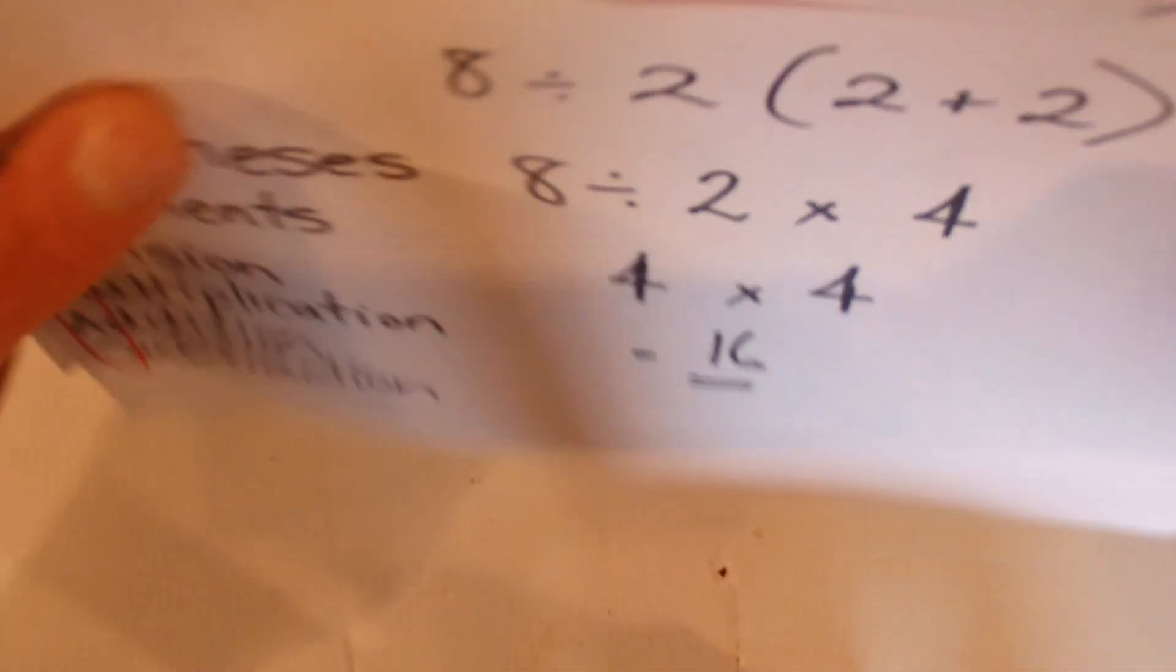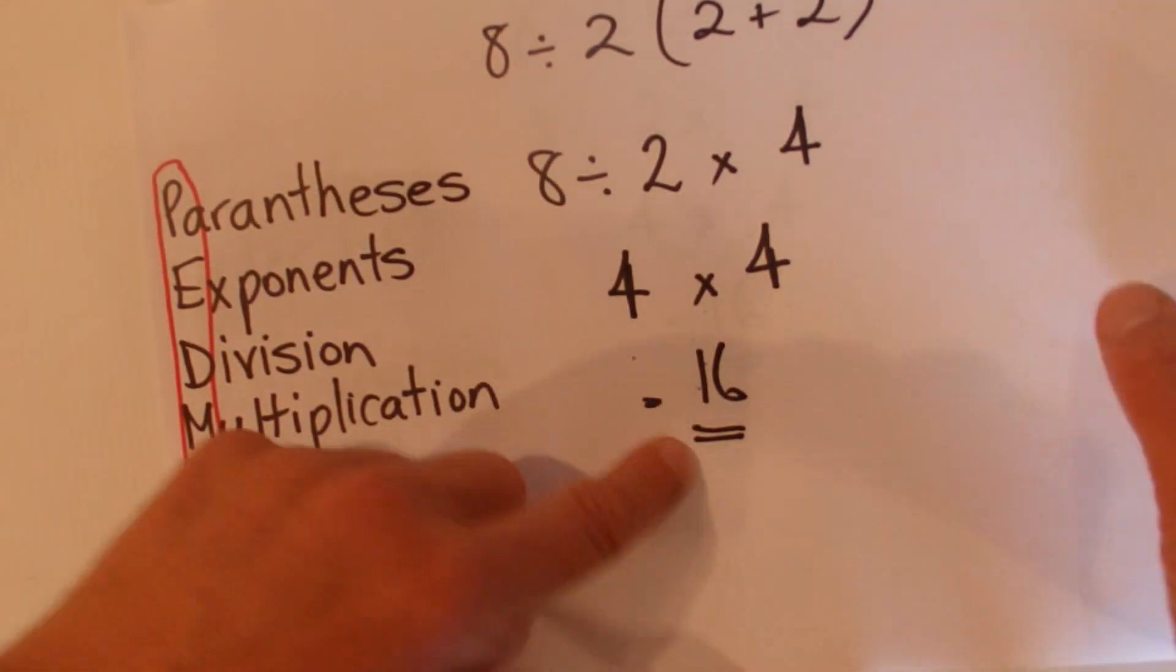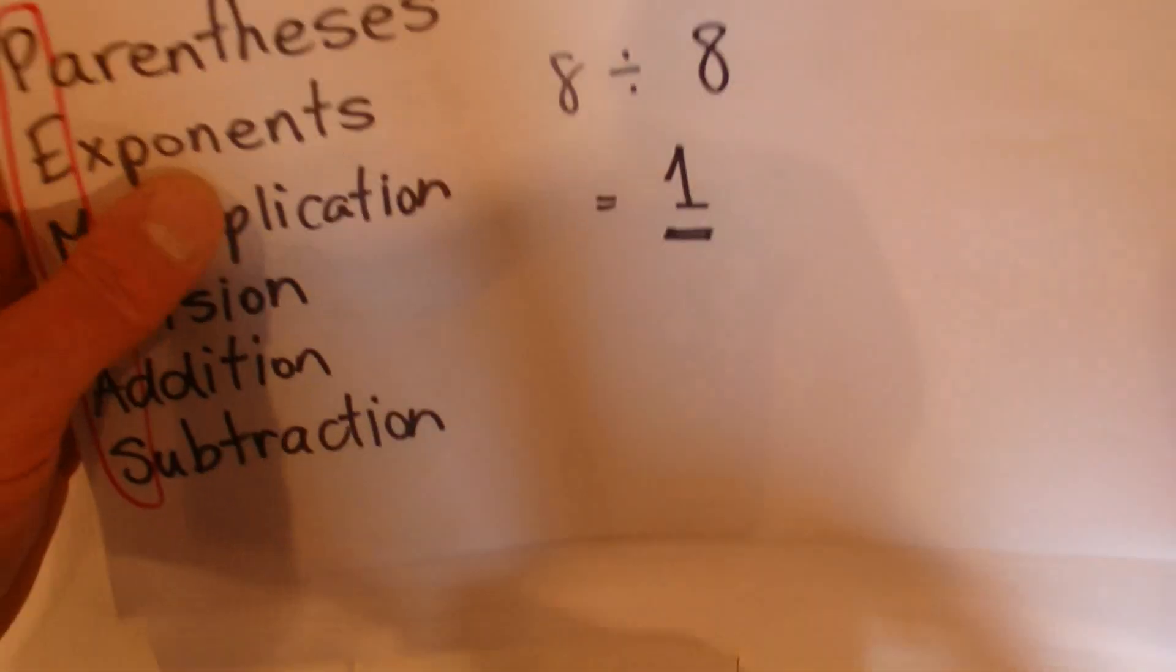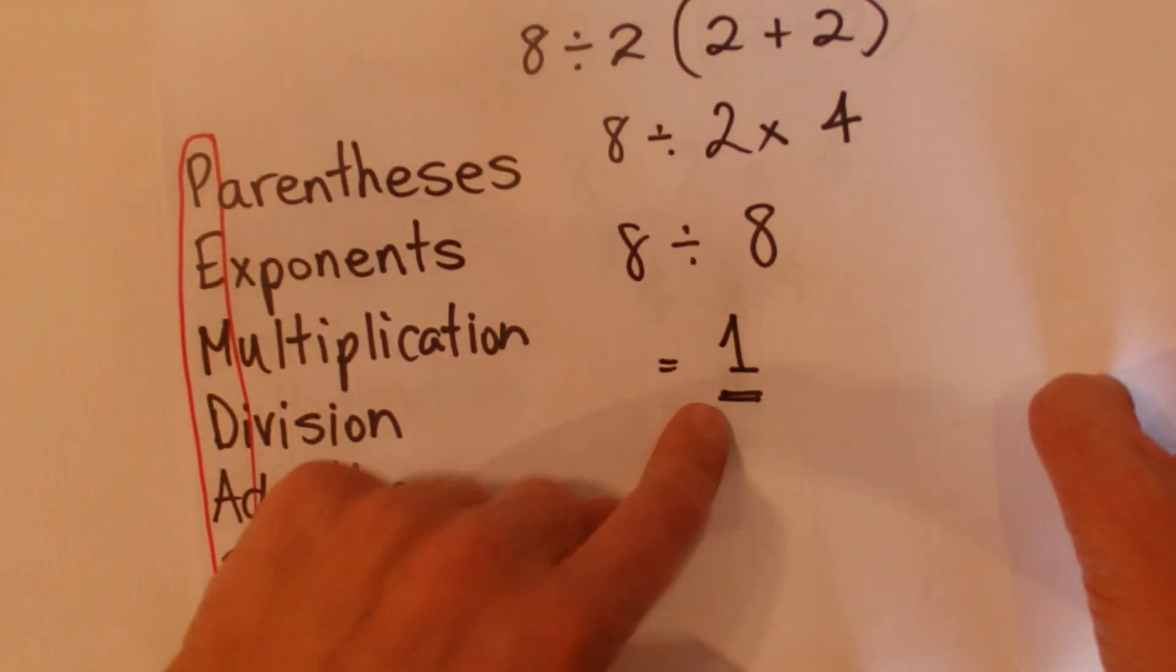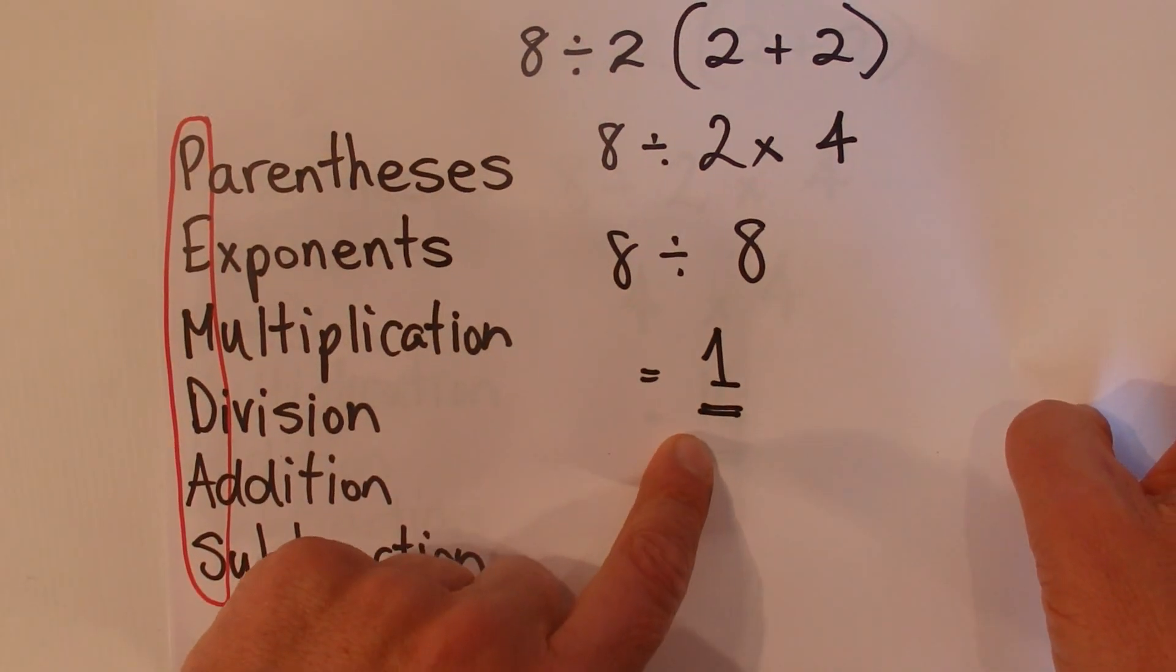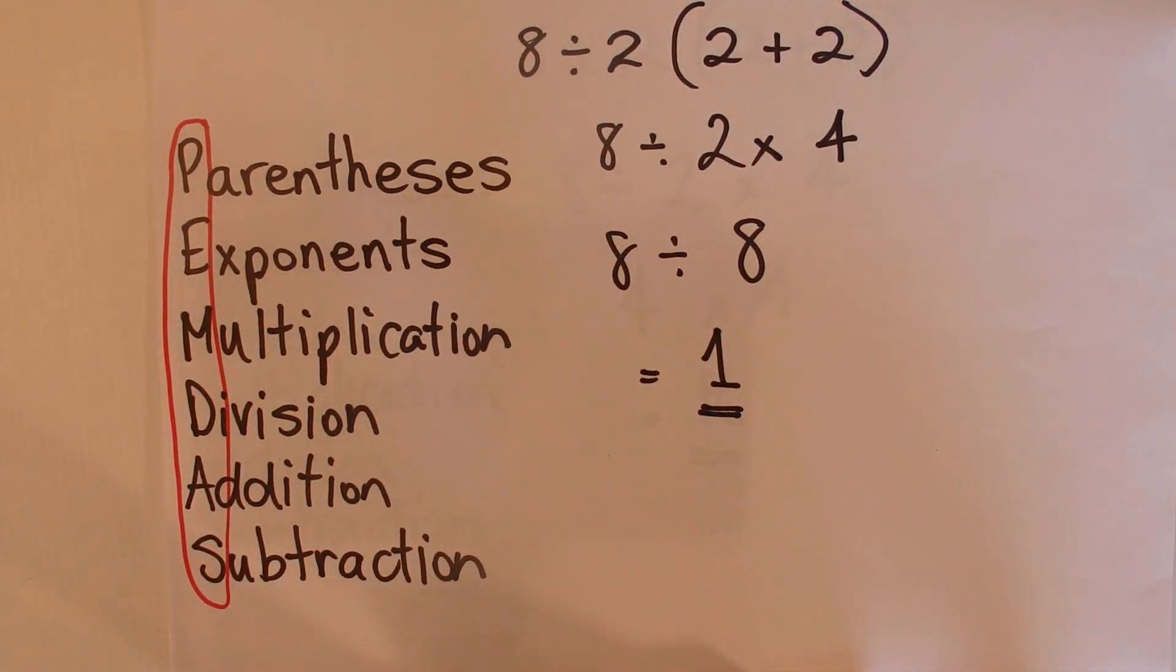BODMAS and PEDMAS—that's the division before the multiplication—gives you 16. But if you feel that you should do the multiplication first, then you get the answer of 1. Well, I hope you've enjoyed this video. Thanks for watching and goodbye for now.